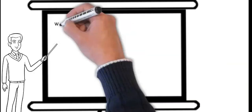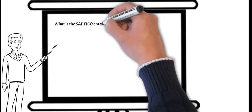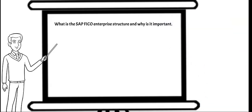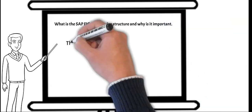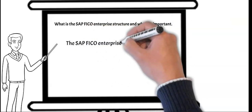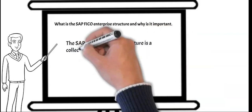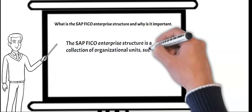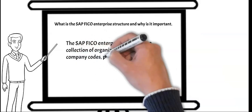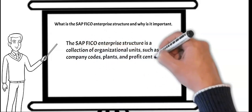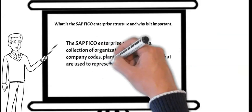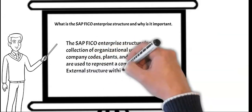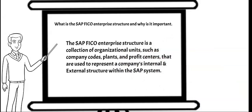The first question might be: what is the SAP FICO enterprise structure and why is it important? You can reply: the SAP FICO enterprise structure is a collection of organizational units such as a company code, plant, and profit center that are used to represent a company's internal and external structure within the SAP system.